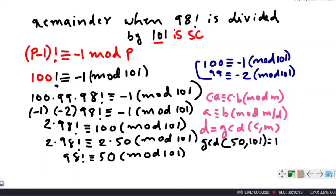So the remainder when 98 factorial is divided by 101 is 50. Hope you liked this video. If you have any video requests, please put them in the comment section below.